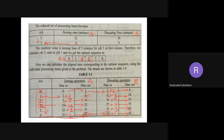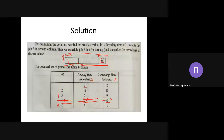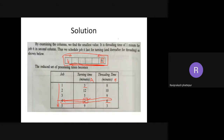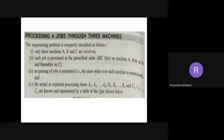That is how sequencing is done and how jobs move from machine A to machine B. Any doubts in sequencing for n jobs and two machines? Students, please respond — yes or no. If you have doubts, ask and I'll explain.